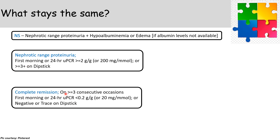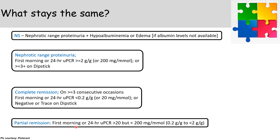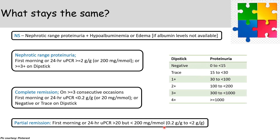Complete remission is defined as first morning or 24-hour urine PCR <0.2 on ≥3 consecutive occasions, or dipstick negative or trace. Partial remission is first morning or 24-hour urine PCR >20 but <200. The dipstick correlates are: negative = 0 to <15 mg/dL; trace = 15 to <30; 1+ = 30 to <100; 2+ = 100 to <200; 3+ = 300 to <1000 (nephrotic range, ≥3+); and 4+ = ≥1000 mg/dL.